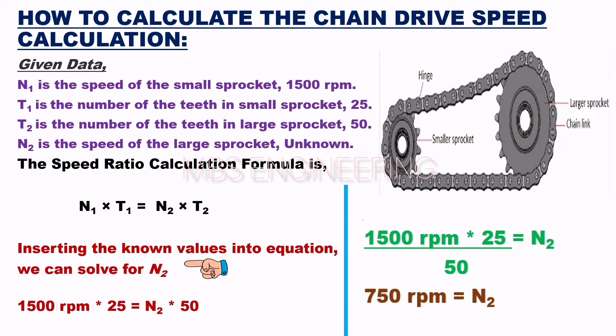1500 revolutions per minute into 25 equals N2 into 50. Solving for N2, we get N2 equals 1500 revolutions per minute multiplied by 25, obtained value divided by 50, then N2 equals 750 revolutions per minute. Therefore, the speed of the large sprocket is 750 revolutions per minute.